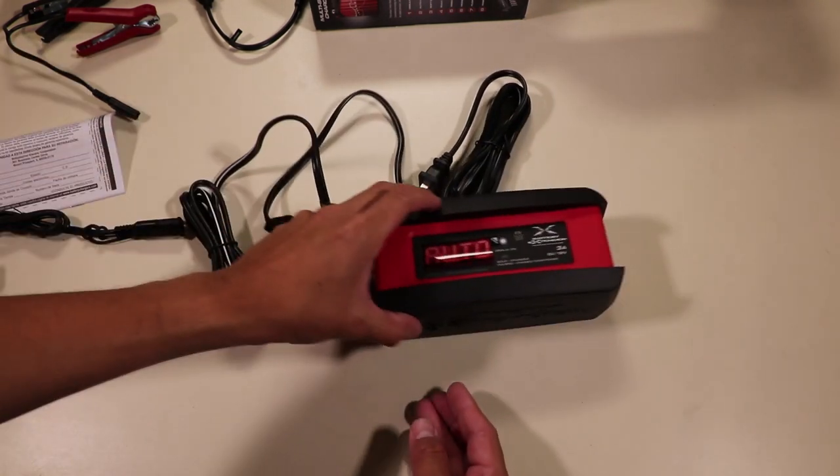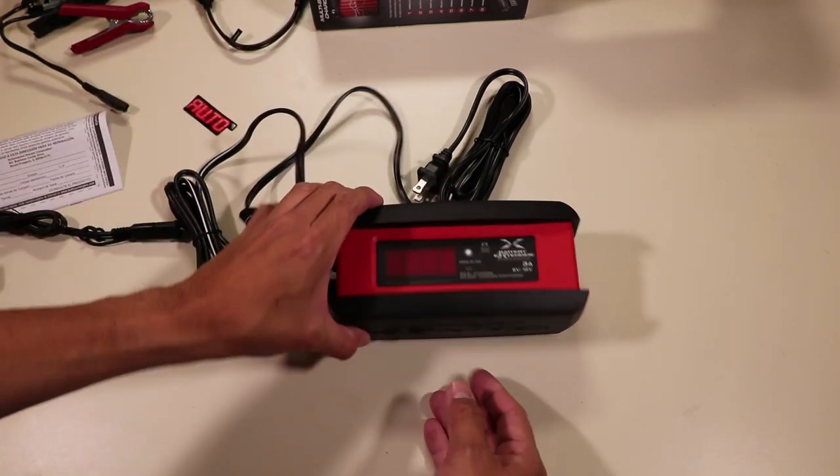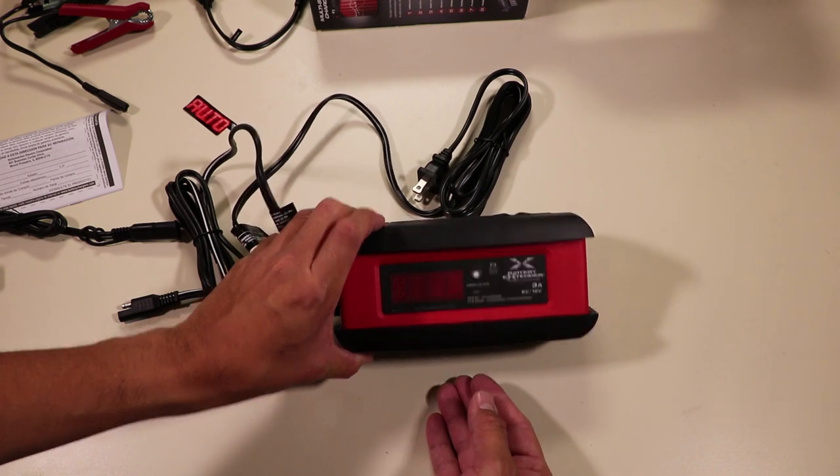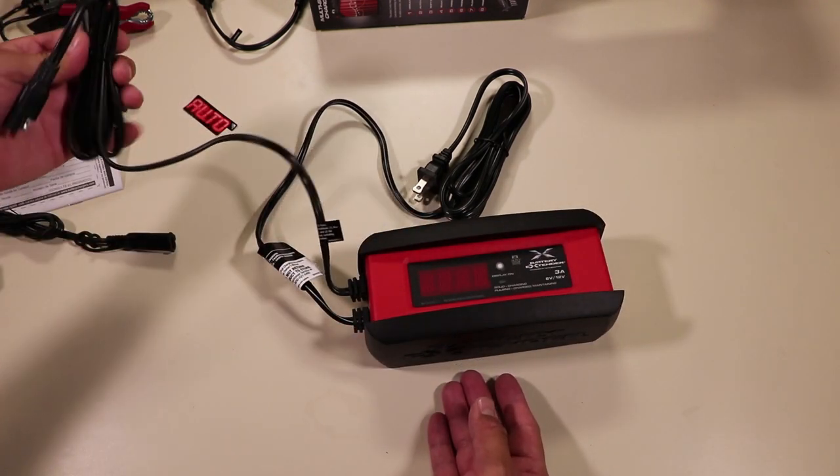Here's what the charger looks like. The battery maintainer has a nice LCD cover on it and the LCD display shows you the status of the battery, shows you the voltage and it gives you warning messages.